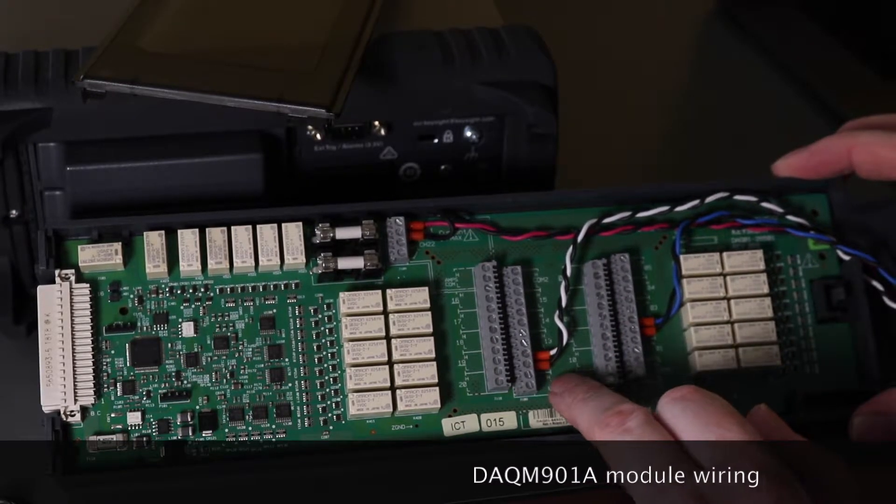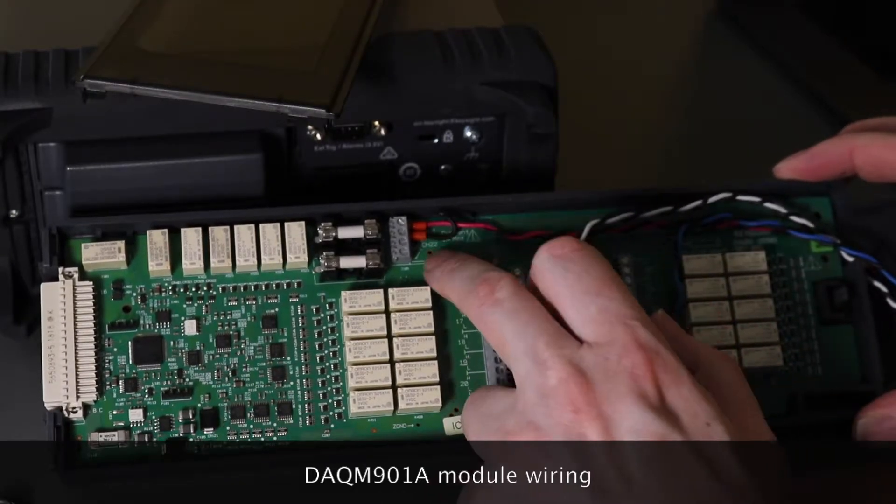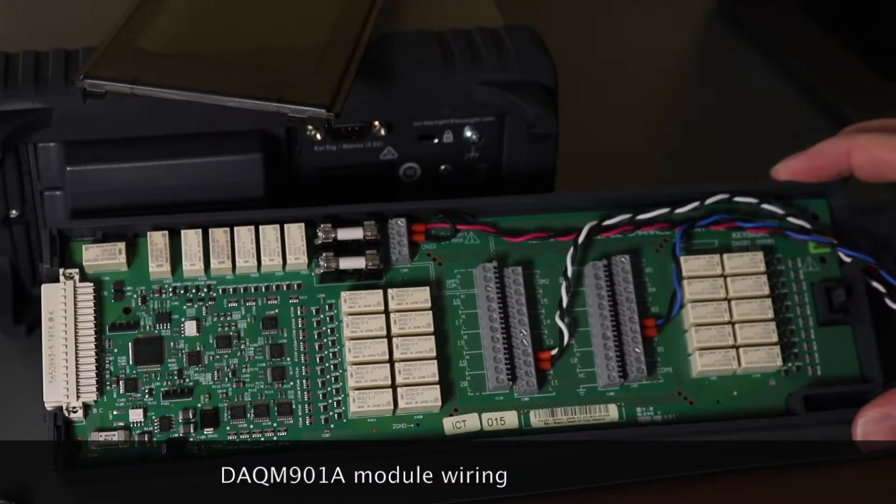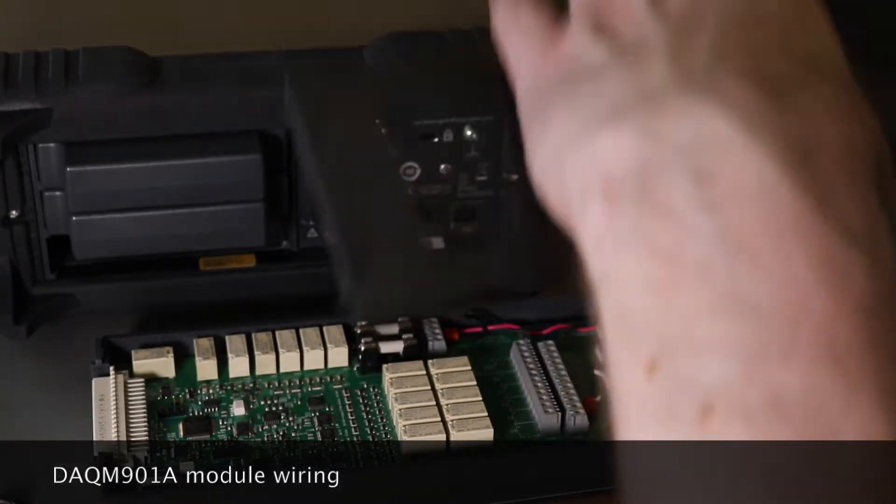Channel 2 and channel 12 will do voltages and resistance. And channel 21 up here will be used for the current. And again it will be installed into slot 3.